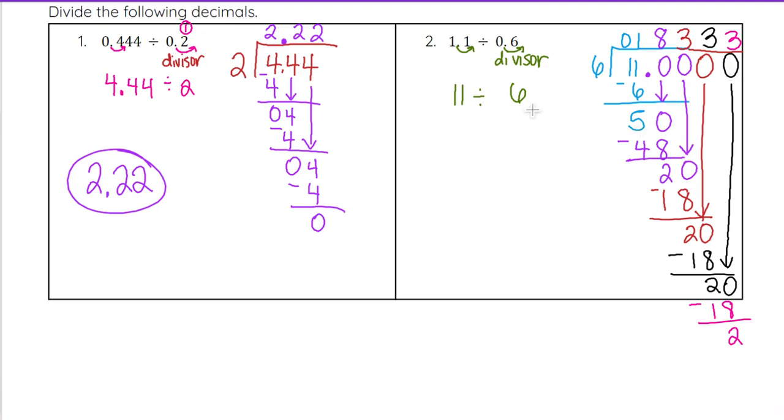So we can bring that decimal point up to the same location it is in our quotient as it was our dividend. And so our answer is going to be 1.83 with the 3 repeating. Notice only the 3 is repeating. So I only put that bar over the 3, not over the 8 as well. And that will be your final answer number 2.